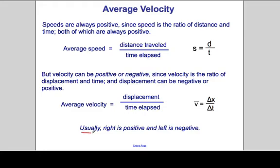And again, as we just stated, usually right is positive and left is negative, so the sign on the displacement is going to indicate the sign on the velocity.